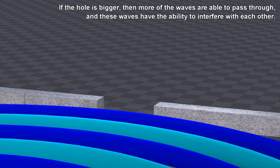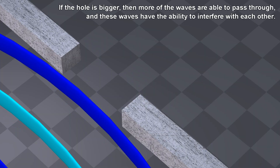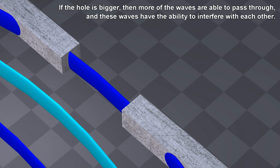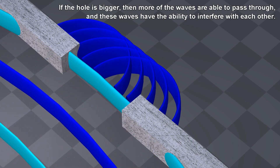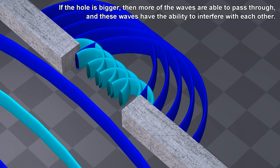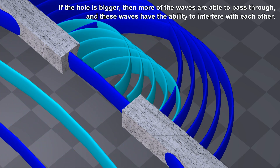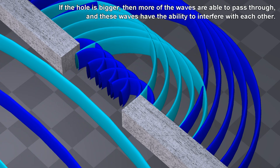If the hole is bigger, then more of the waves are able to pass through, and these waves have the ability to interfere with each other.